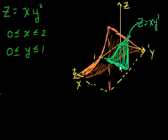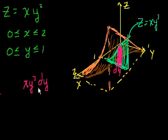To figure out that area, we could take a dy, a change in y, a dy, multiply it by the height, which is xy², right? So we take xy², multiply it by dy, and if we want this entire area, we integrate it from y is equal to 0 to y is equal to 1.